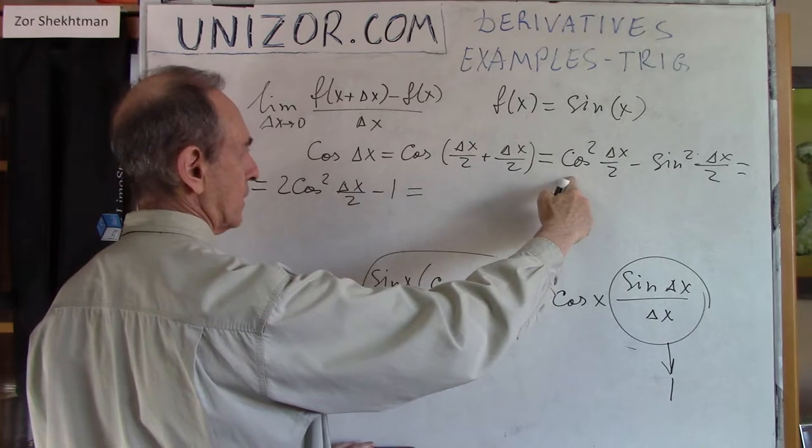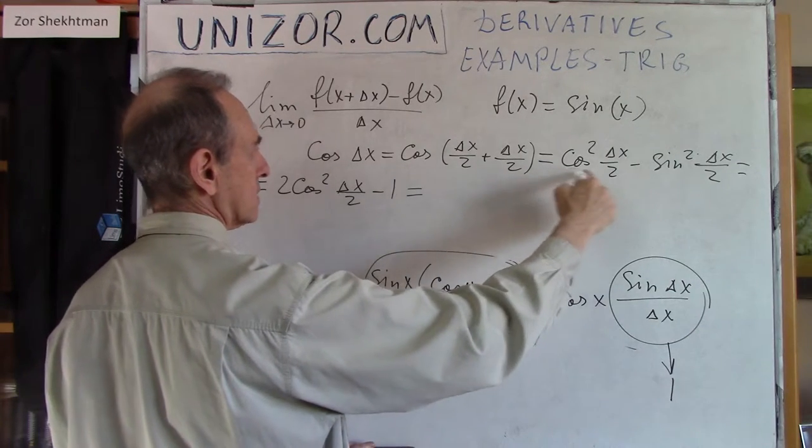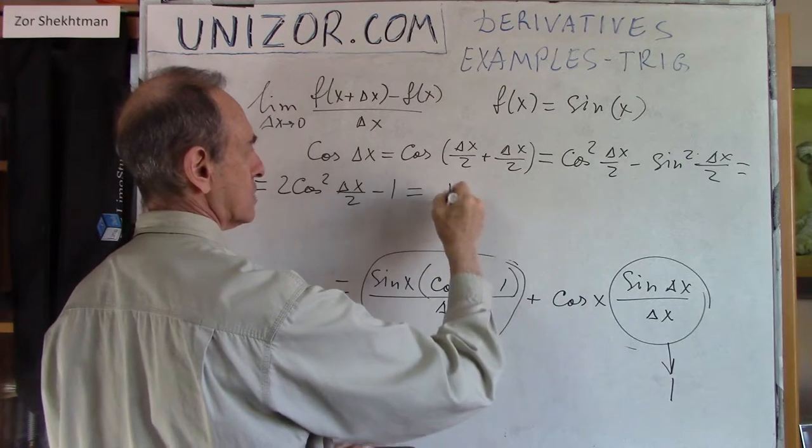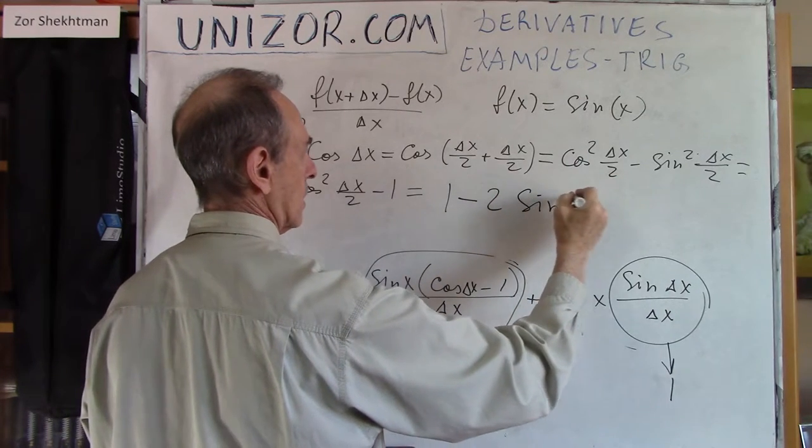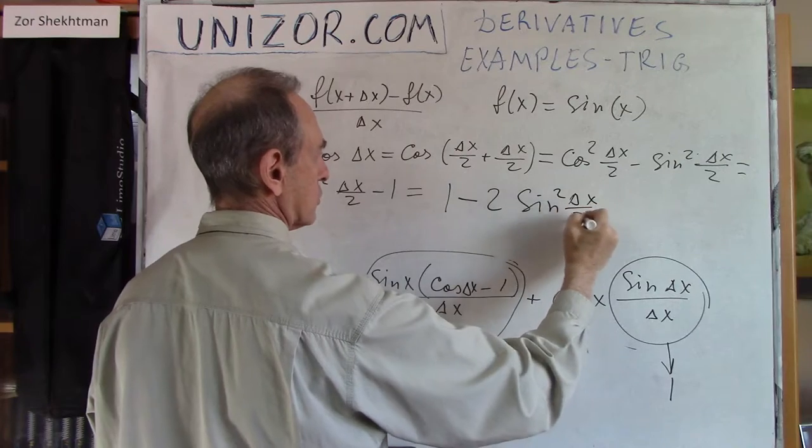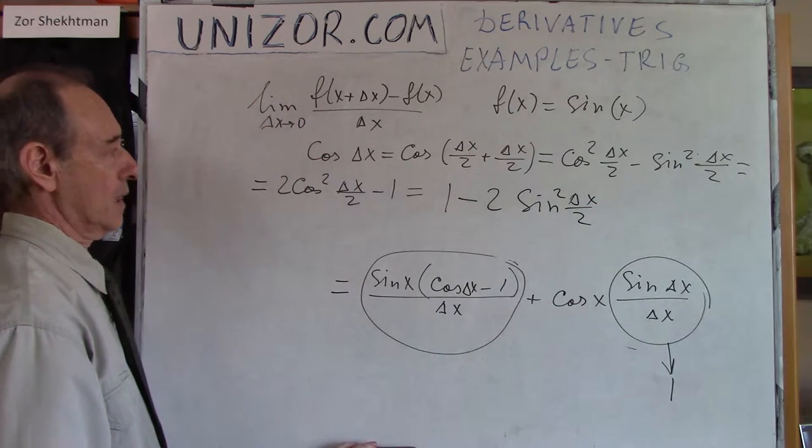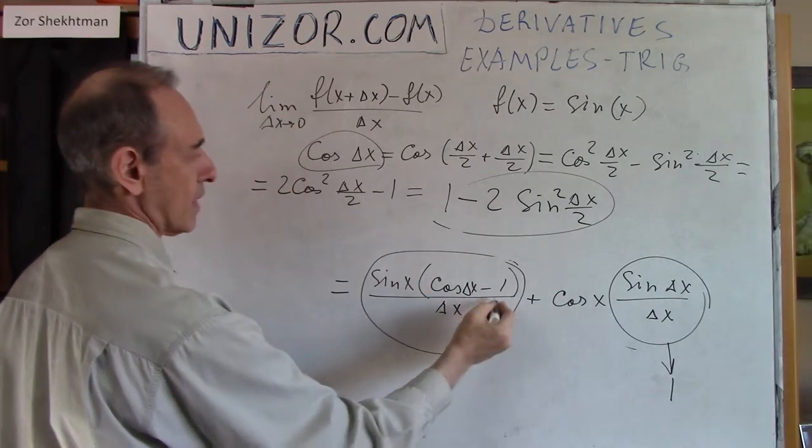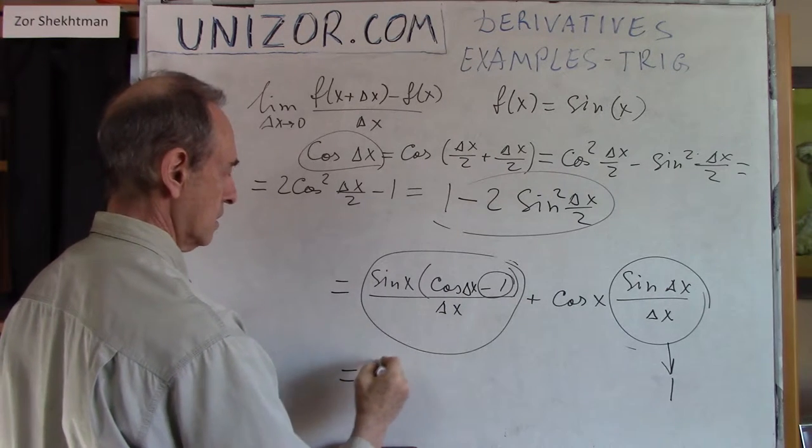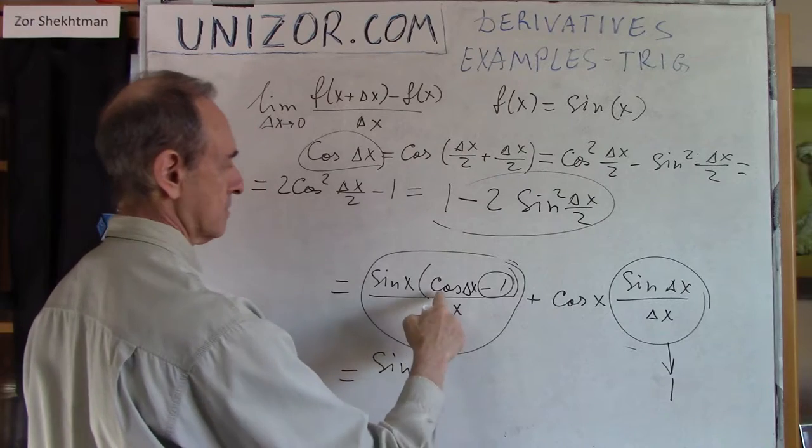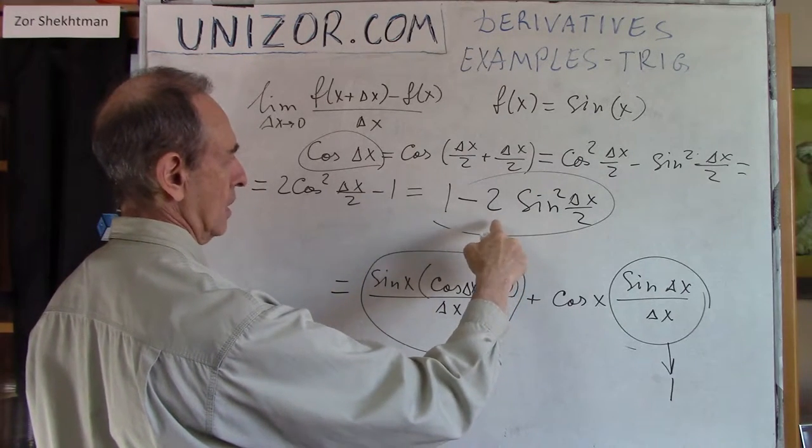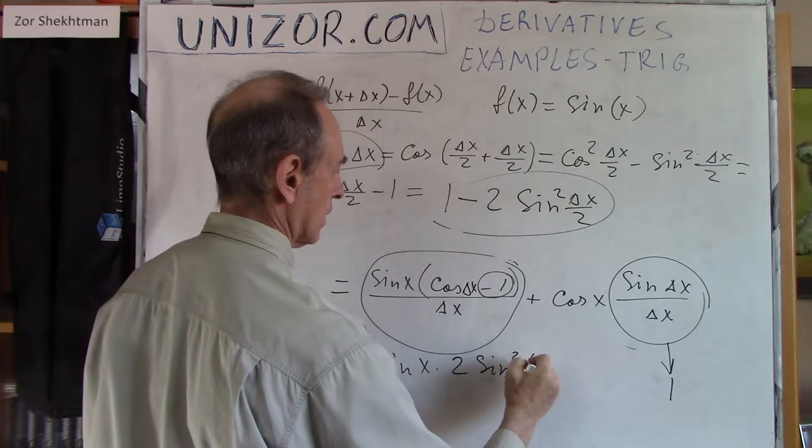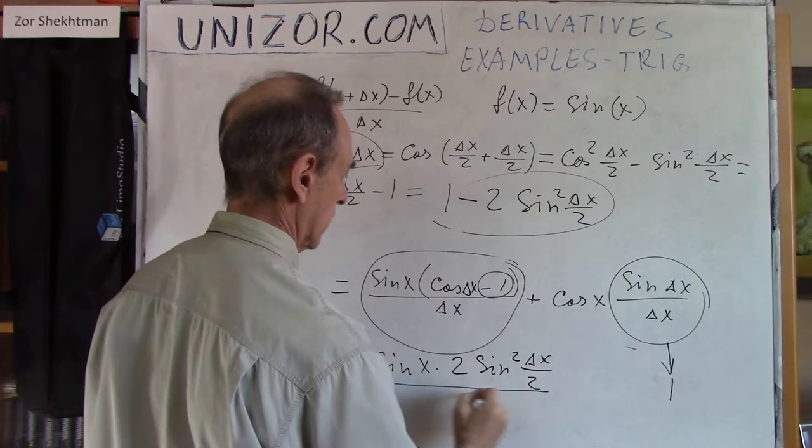Or if we replace it with sine, it would be one minus two sine squared delta x over two. That's what we actually need. This is the cosine delta x. If I subtract one, the result would be minus two sine squared delta x over two divided by delta x.